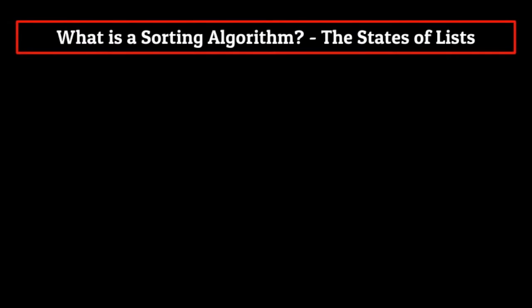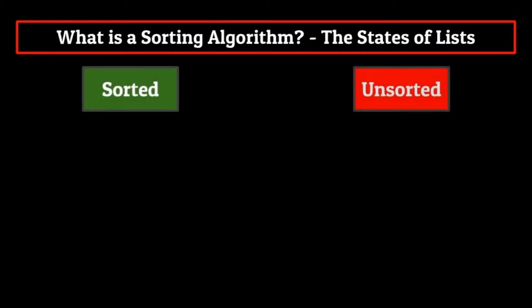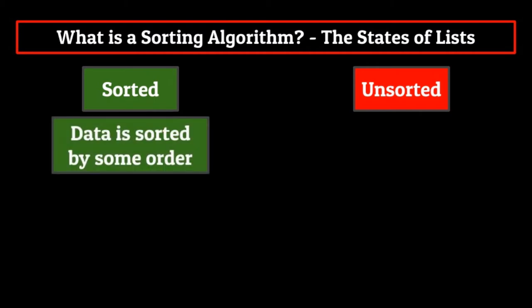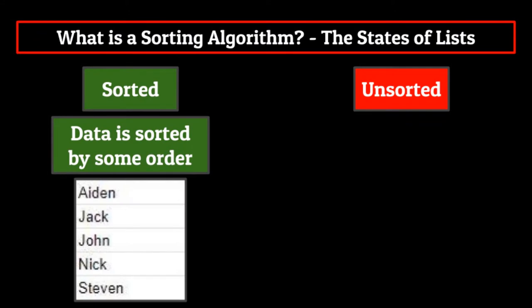Now the big problem we need to solve with lists has to do with the two different states that they can be in, either sorted or unsorted. In a sorted list, the data is sorted by some particular order, whether that be numeric or alphanumeric. Every data point has a specific place within the list, and there is a natural order to things.